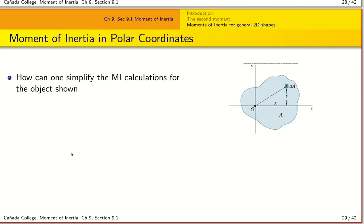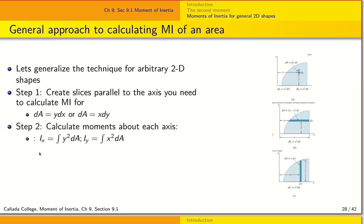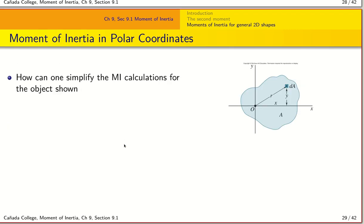In the end, the general approach gives us I_x = ∫y² dA and I_y = ∫x² dA. These are the two fundamental moment of inertia calculations for 2D shapes.